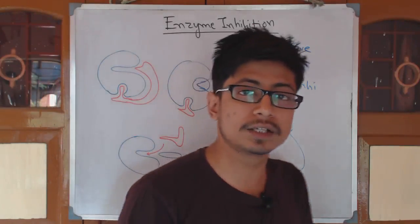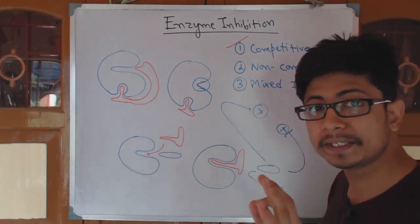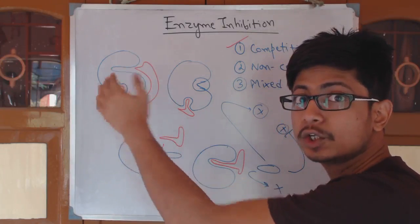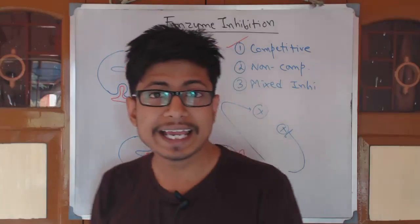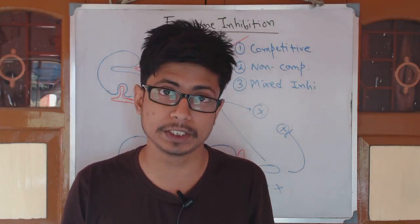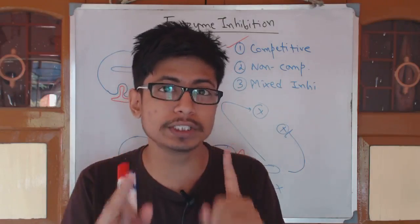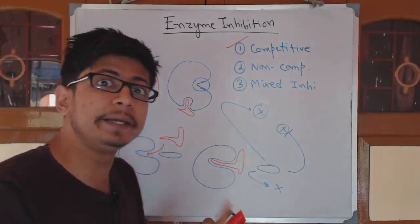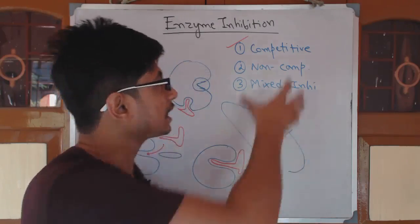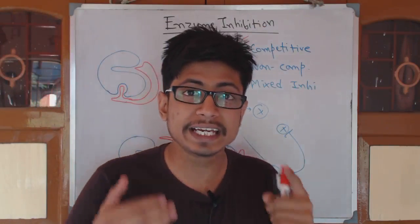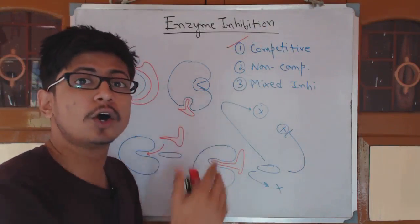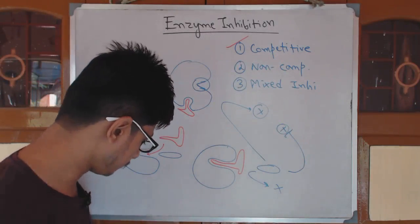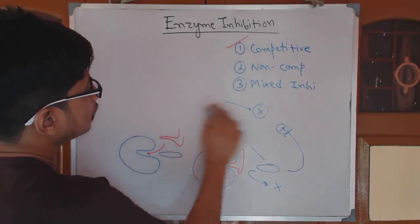Remember one thing carefully: in competitive inhibition, either the substrate or the inhibitor binds to the active site or any other site on the enzyme — but not both at the same time. The enzyme can only bind with either substrate or inhibitor, not both. If the enzyme is attached to the substrate it will convert it to product; if attached to the inhibitor, no product is made.